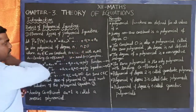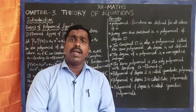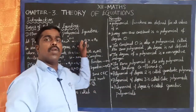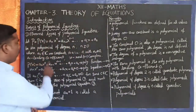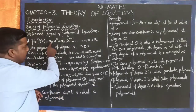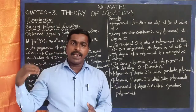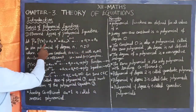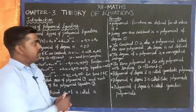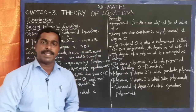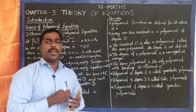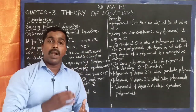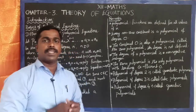If the coefficients a₀, a₁, ..., aₙ are complex numbers, it is a polynomial over ℂ. If the leading coefficient is a real number, it is a polynomial over ℝ. If the coefficients are rational, it is a polynomial over ℚ. If the coefficients are integers, it is a polynomial over ℤ.